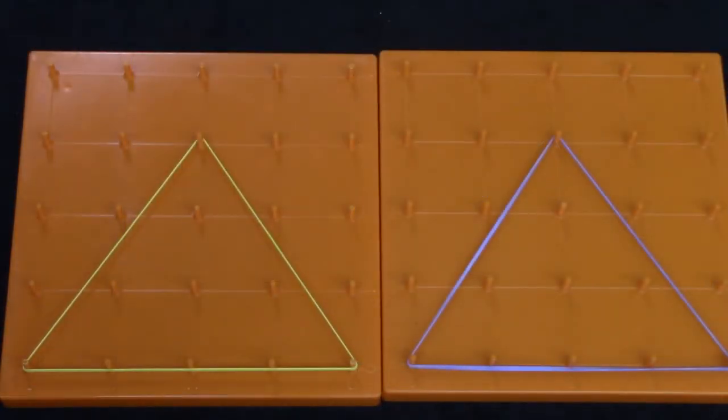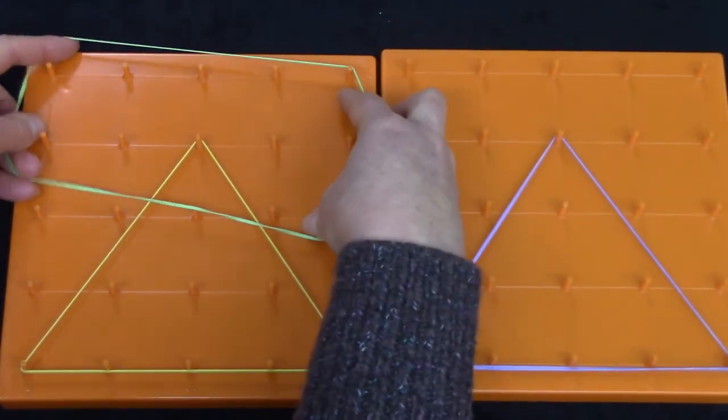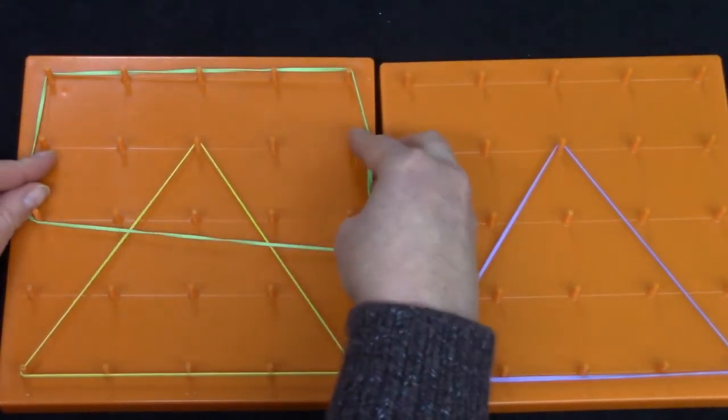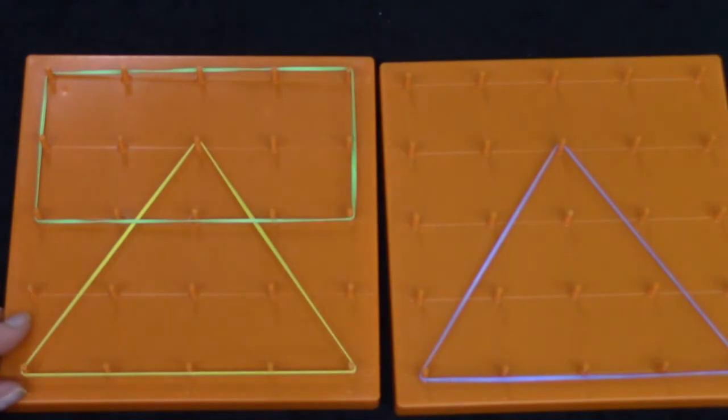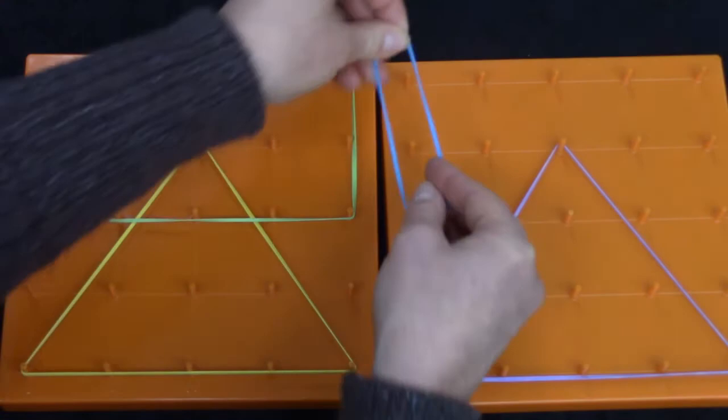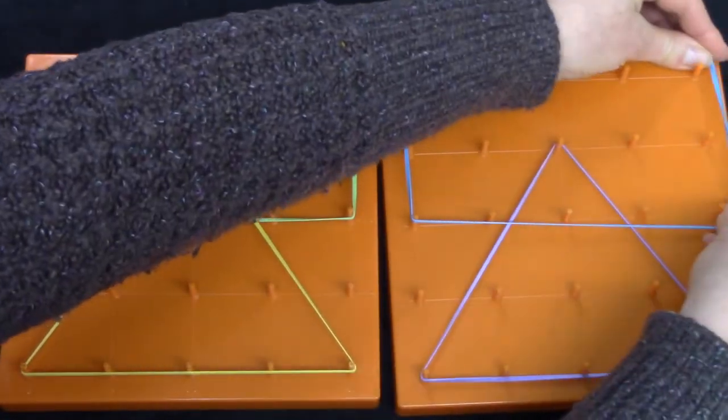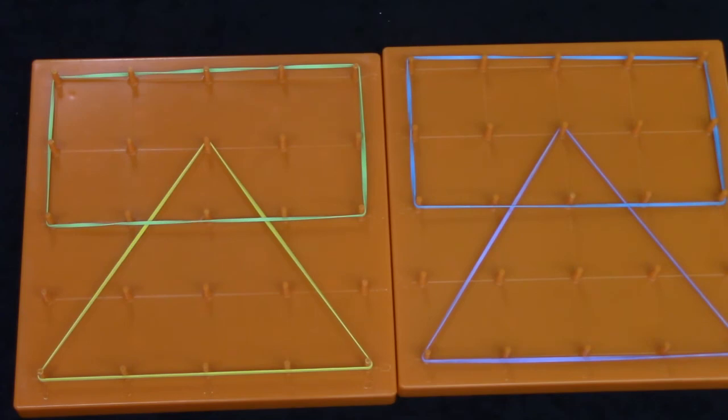If you have two geoboards you can practice making congruent shapes—shapes that are the same shape and the same size. I just made a rectangle on this board and I could make a rectangle on my other geoboard as well. These two rectangles and these two triangles are congruent.